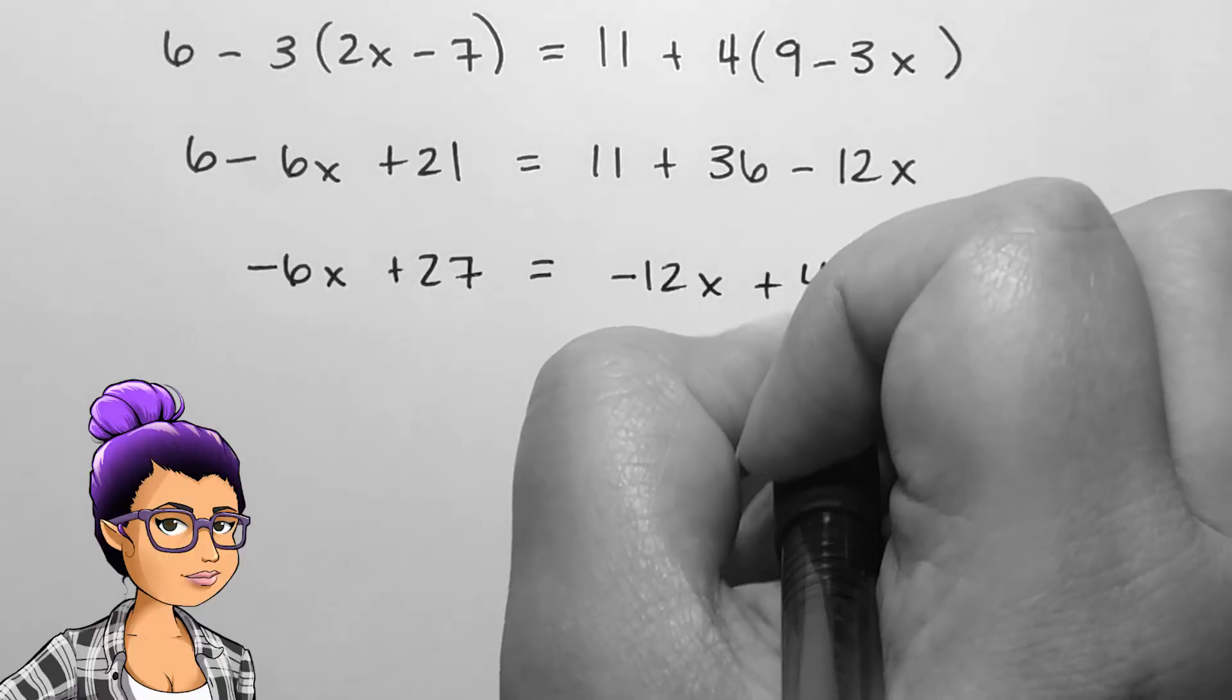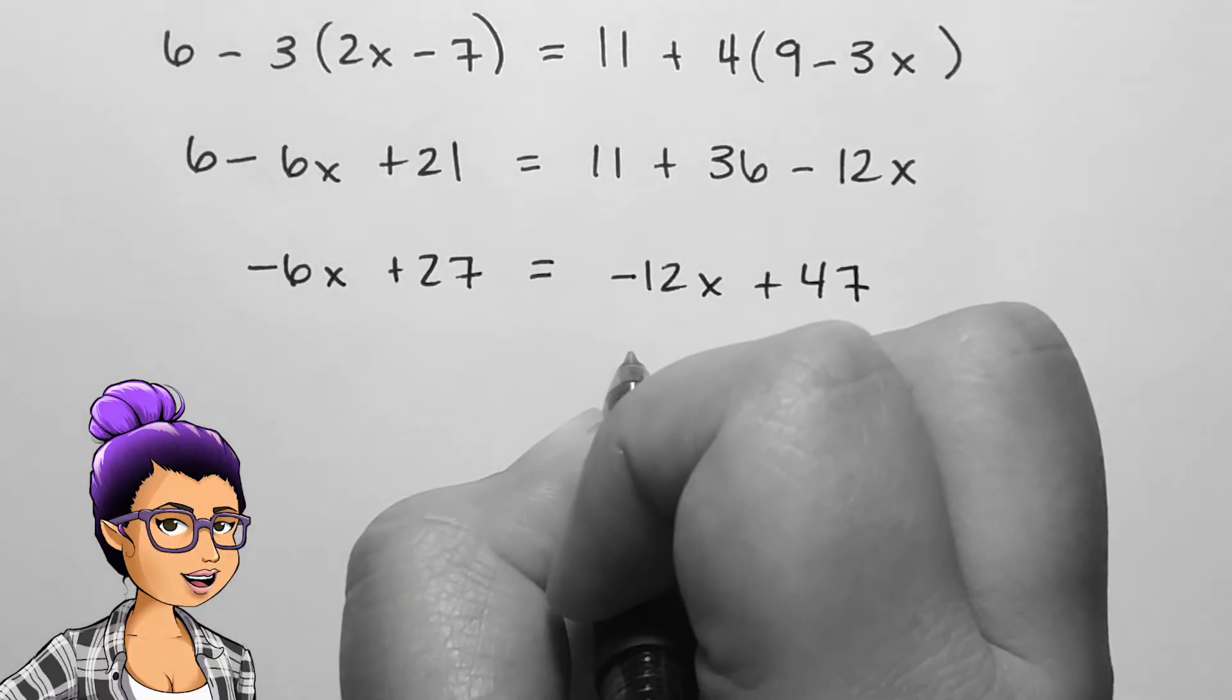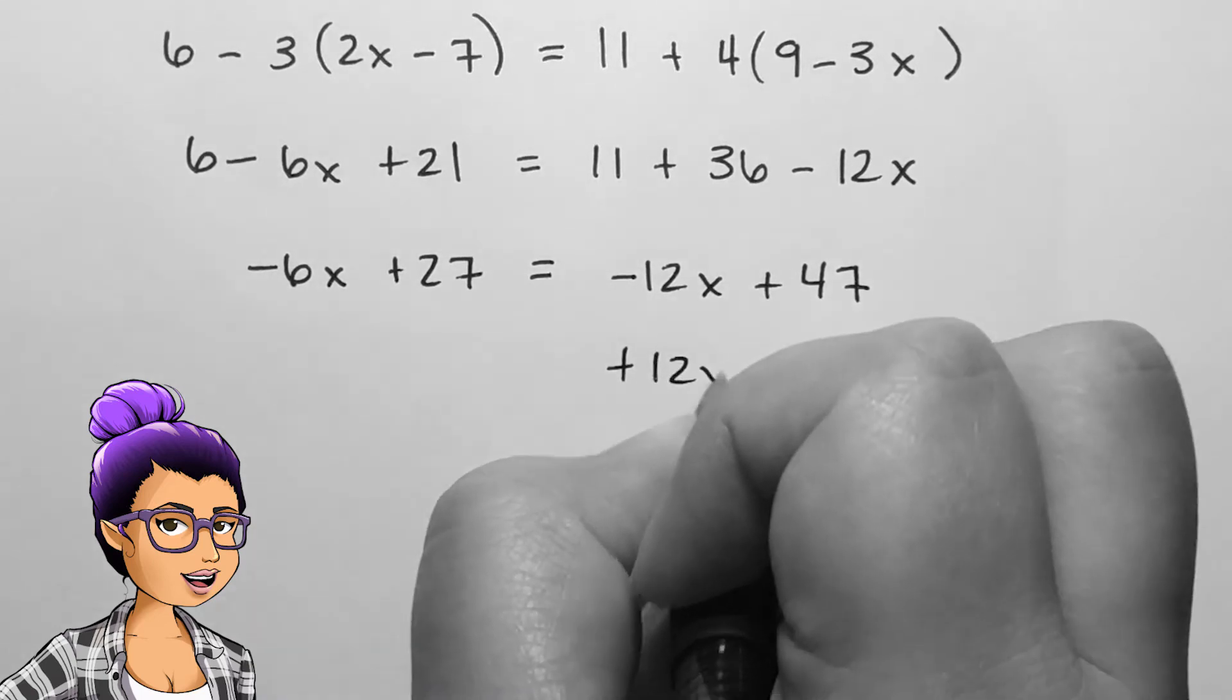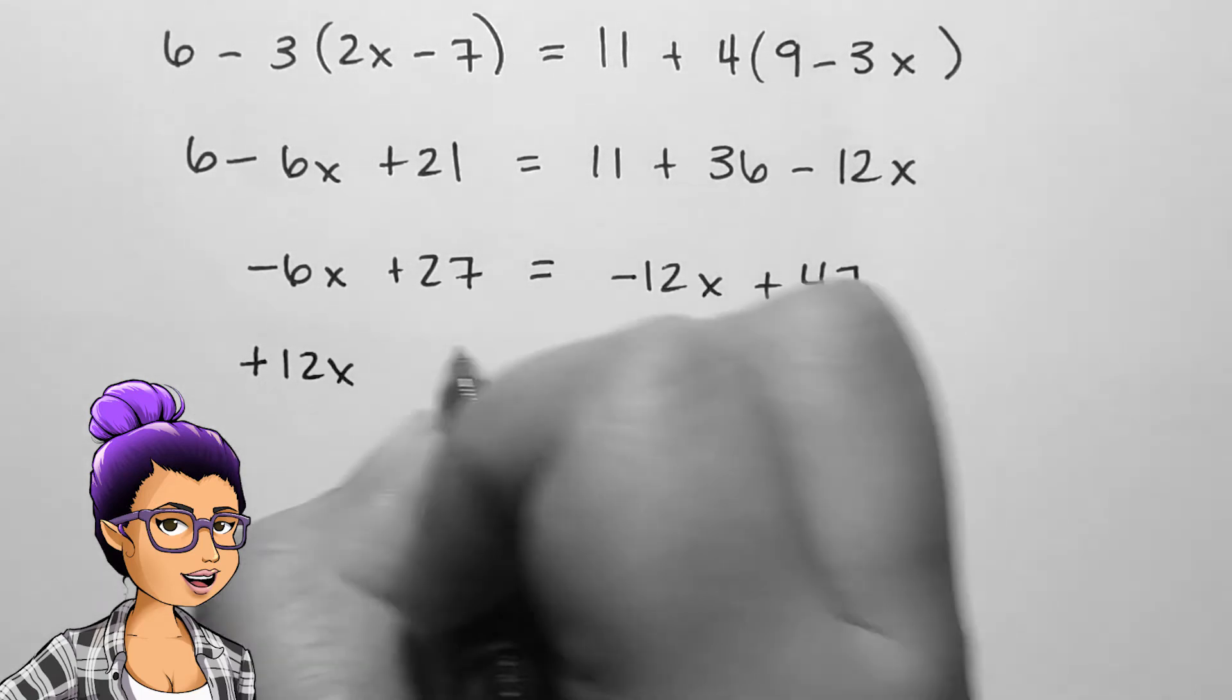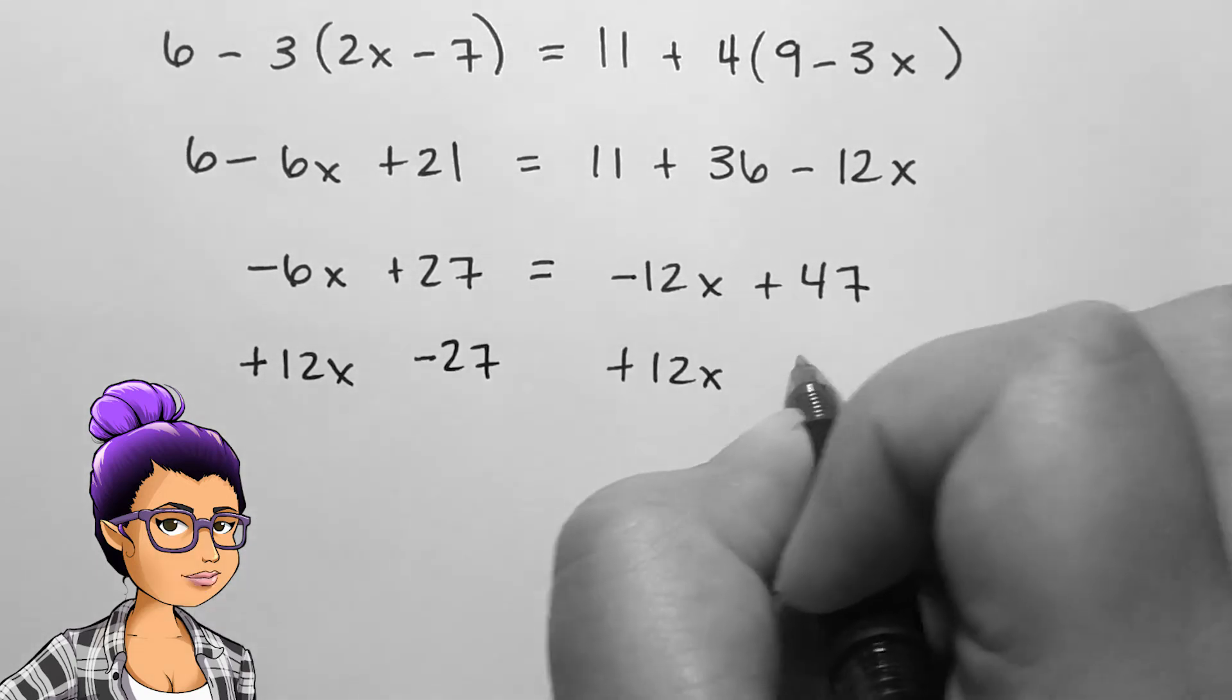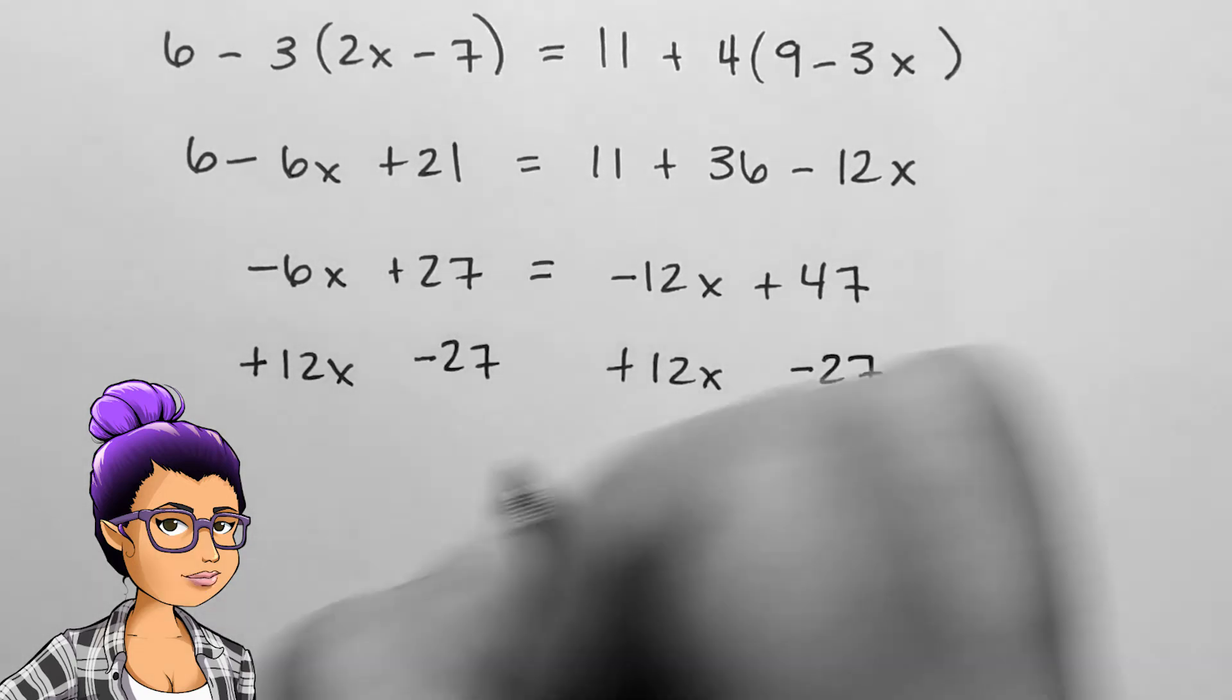Now we can follow the steps from the first example by gathering all of the x terms to one side and the constant terms on the other. If I add 12x to both sides and subtract 27 from both sides,